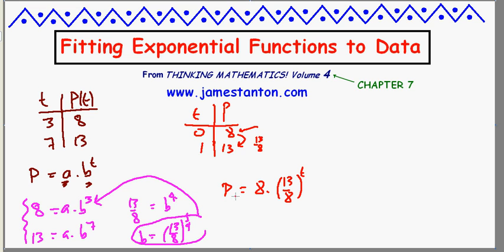And check if I'm right. Put t equals 0, I'm left with p equals 8 times 1, which is 8. Yay. Put t equals 1, I'm left with p equals 8 times 13 over 8, which is 13. That does it.